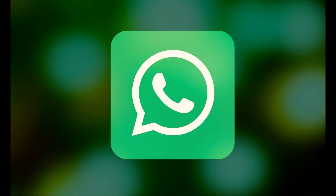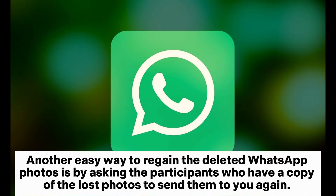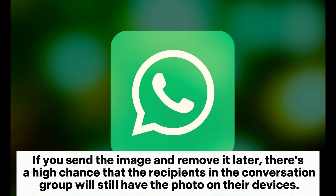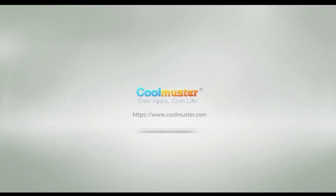Way five: how to get back deleted photos from WhatsApp on Samsung by asking the participants. Another easy way to regain deleted WhatsApp photos is by asking the participants who have a copy of the lost photos to send them to you again. If you sent the image and removed it later, there's a high chance that the recipients in the conversation or group still have the photo on their devices.